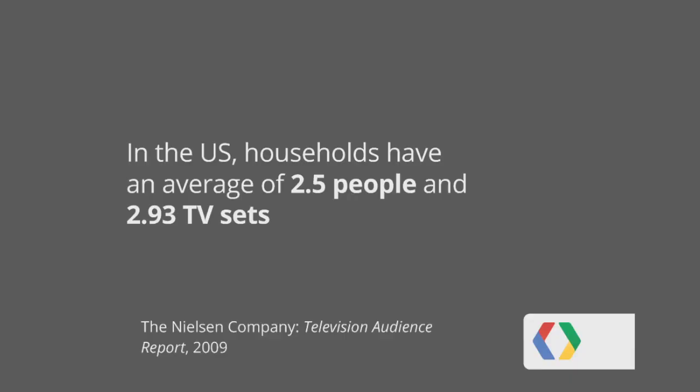The first relevant statistic is that in the U.S., households have an average of 2.5 people and 2.93 TV sets. The average number of TV sets per household continues to increase, whereas the average number of people has remained relatively constant. On average, there are more TVs than people in U.S. homes, which also likely means people own more TVs than other types of connected devices, such as laptops, smartphones, and tablets.